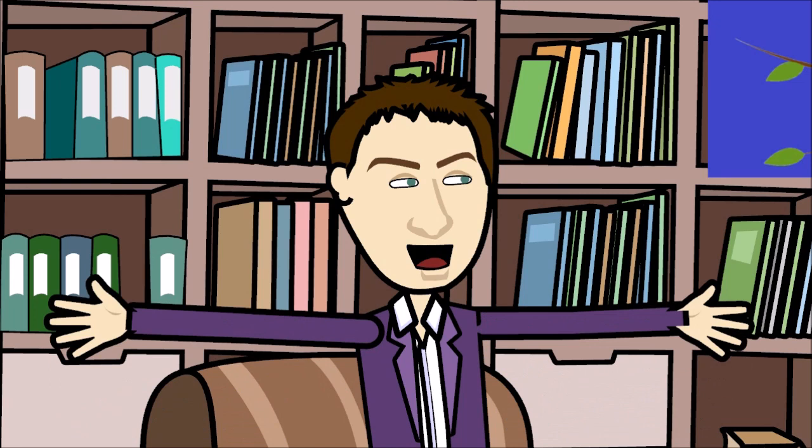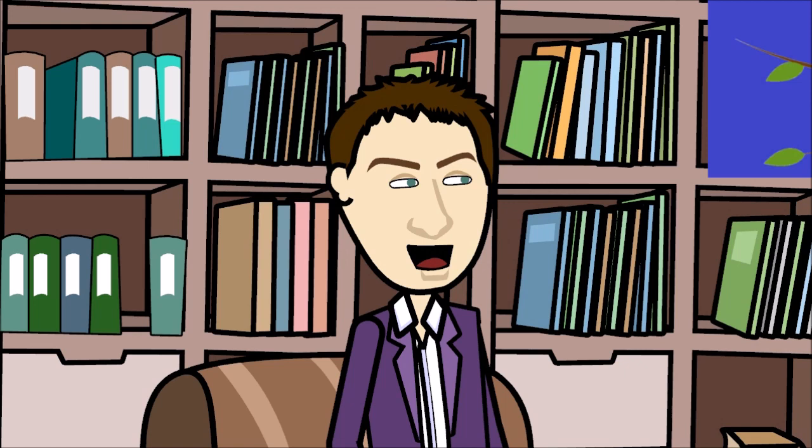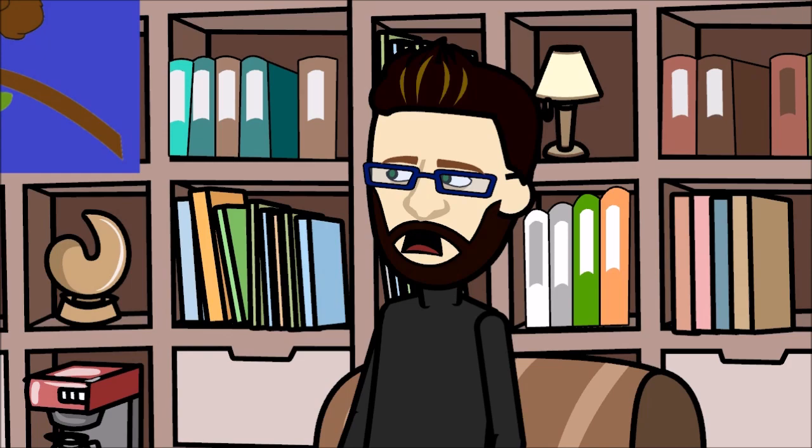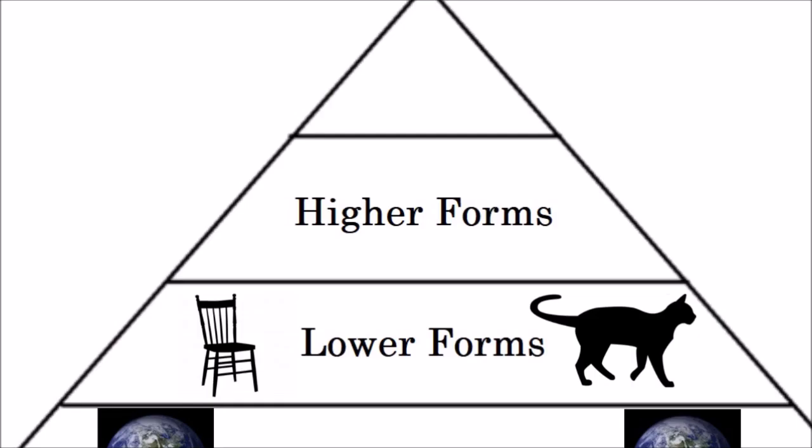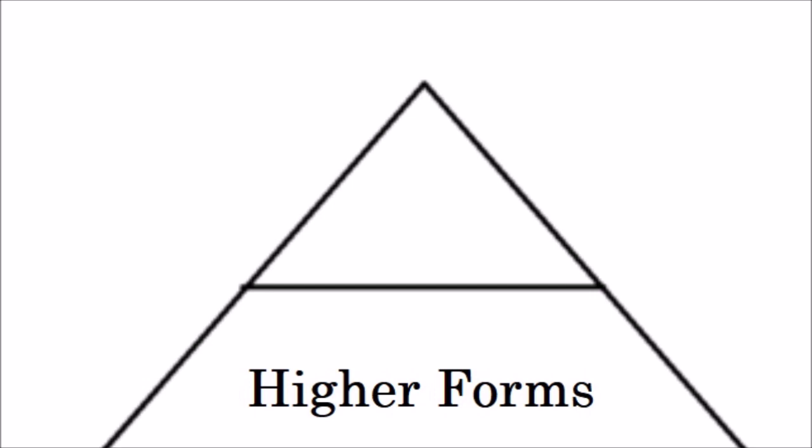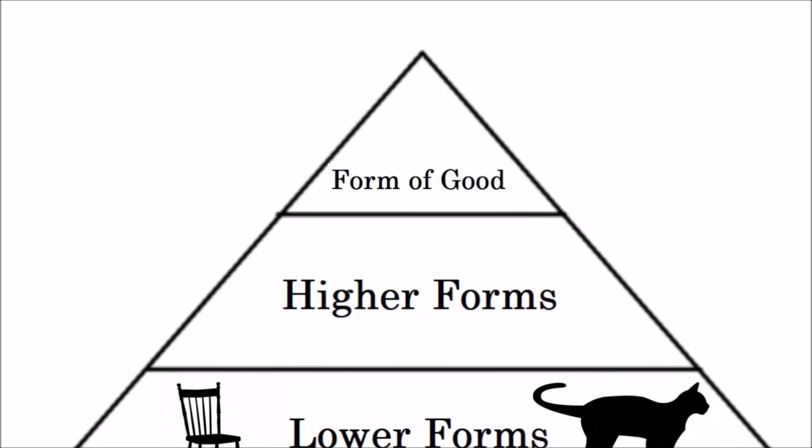However if there is a perfect form of everything would there not be a perfect form of a perfect form? And therefore it would ultimately bring everything to a singular form. That is correct. As we work our way up the hierarchy we reach the top point. And that is the form of forms. And Plato claimed this was the form of good.